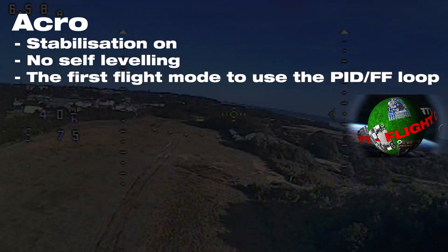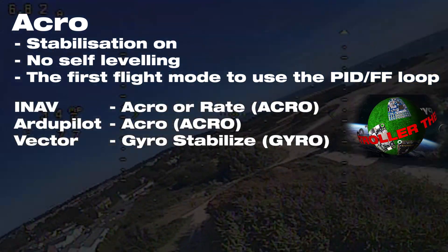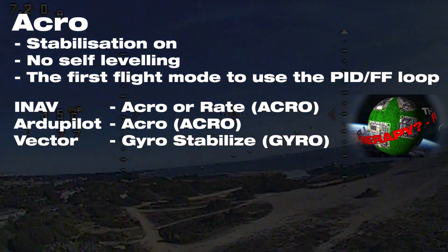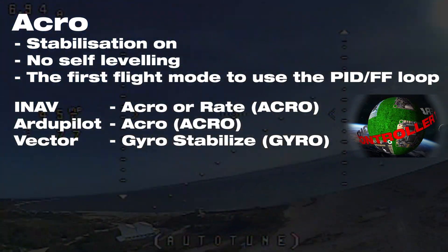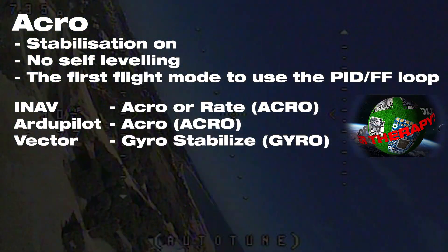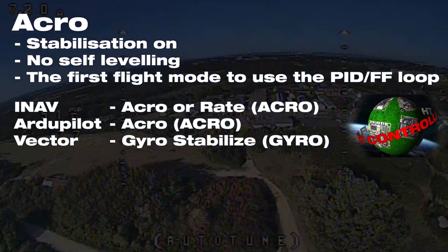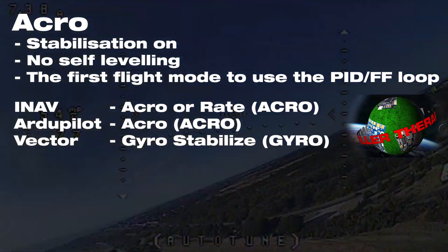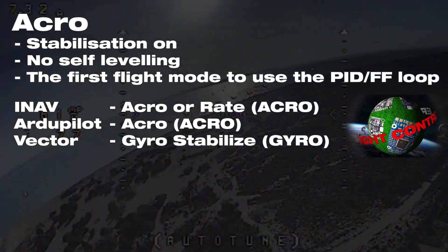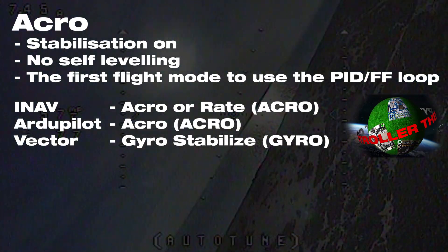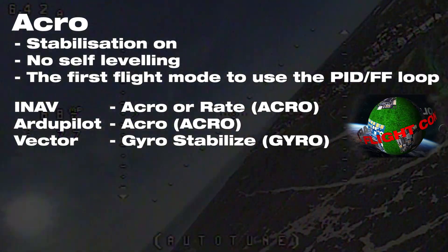Building on that, we have acro mode, sometimes called rate mode. There's a little confusion where people call it air mode — it's not actually air mode, we'll talk about that later. Acro adds base stabilization by enabling the PID loop on the control inputs, so it will smooth out buffeting from wind. There are no other limits on it — you can roll and pitch as fast as your model will allow.